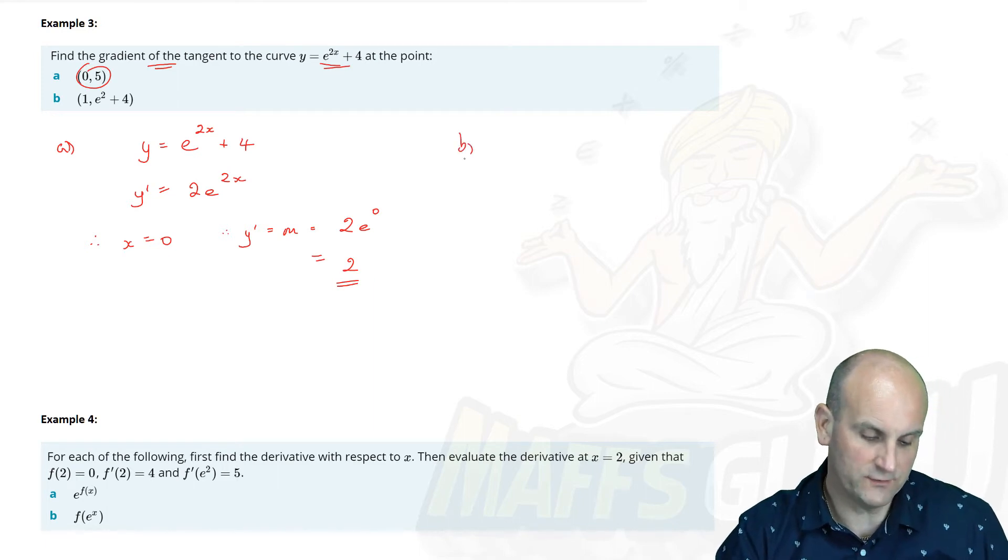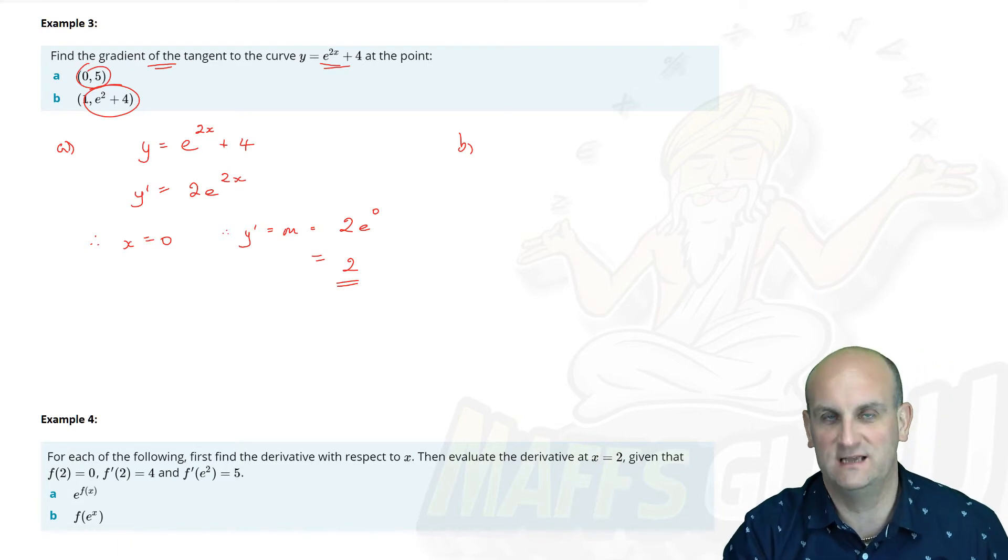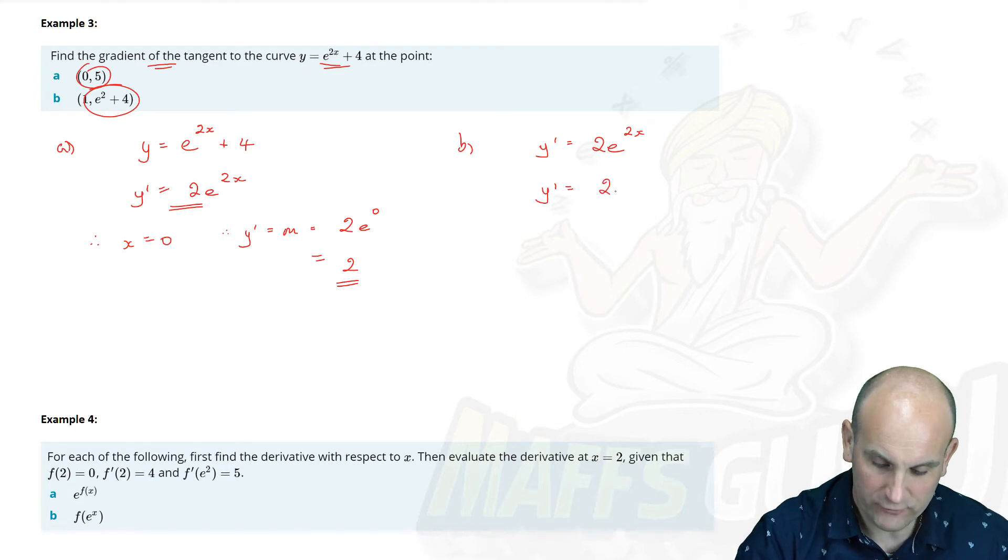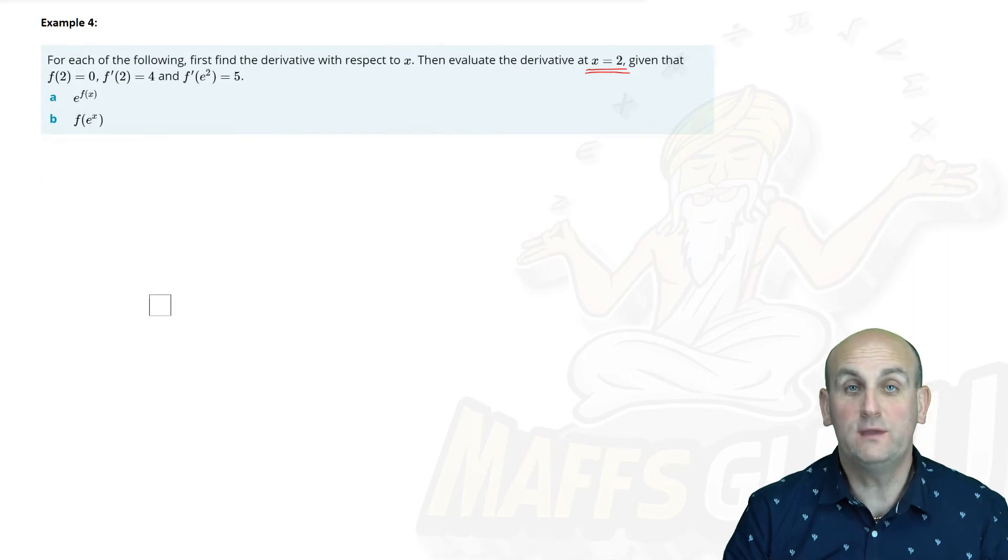Part B. Find the value of the gradient of the tangent to this point here. Again, because I'm finding the gradient of a tangent, I don't care about the y value. Only interested in the x value. And I've already done all the hard work here. So I know y' is still equal to 2e^(2x). So y' is equal to, let's put the value of 1 in, 2e², and we will just leave it at that. Remember, methods likes your answers to be in exact values, unless otherwise stated.